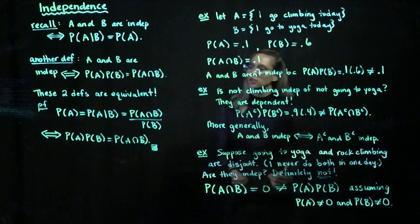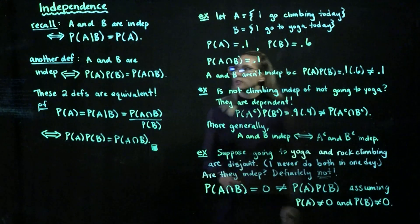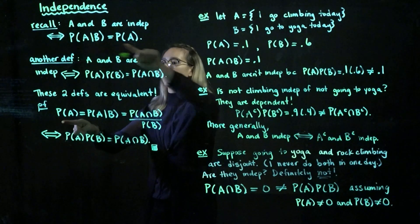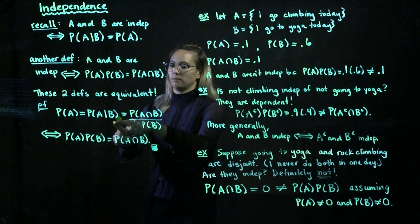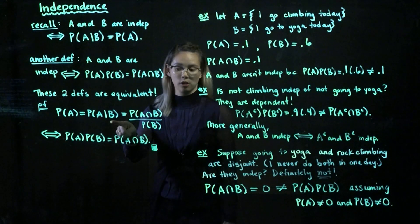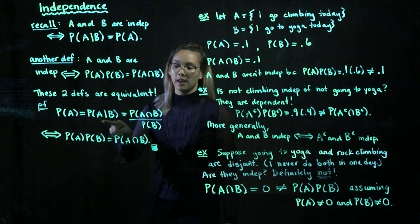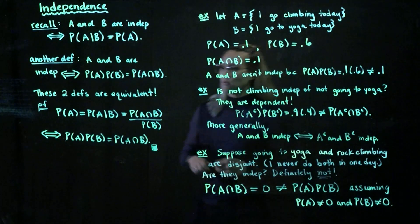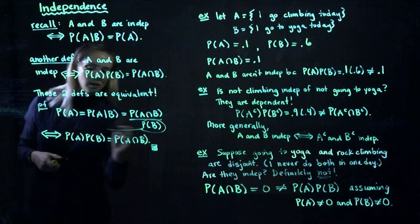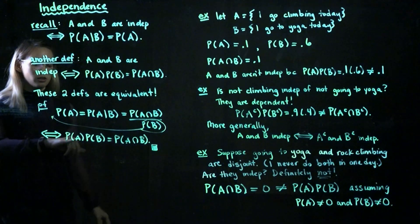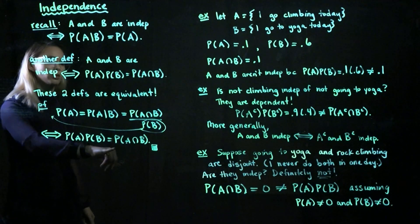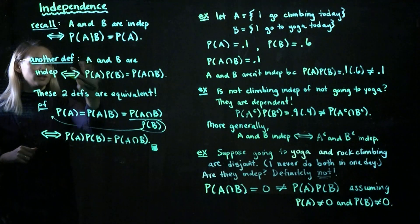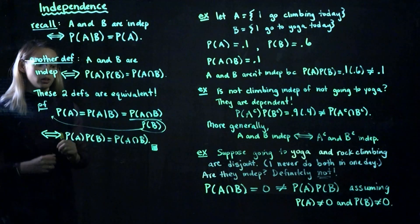Let's talk about why these two definitions are equivalent to each other. First, let's look at our first definition of independence — written here and rewritten down here. Now let's take our definition of conditional probability. The probability of A given B is equal to the probability of the intersection divided by the probability of B. Now, let's multiply the probability of B across. Then we get the probability of A times the probability of B is equal to the probability of A intersect B. So now we know any time one of these definitions holds, then the other definition must also hold.